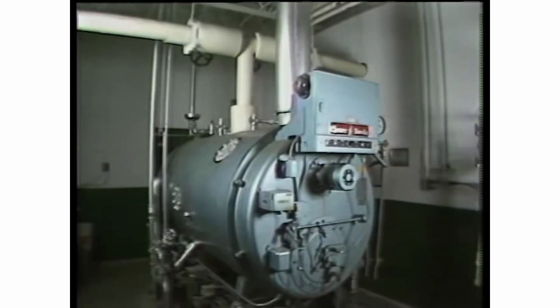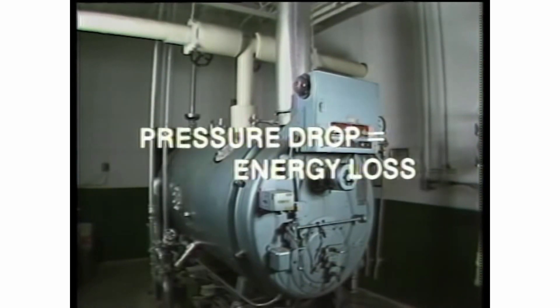The greatest pressure drop in the distribution system should not exceed 20% of the maximum boiler pressure, radiation and friction losses included. Remember, pressure drop is energy loss.